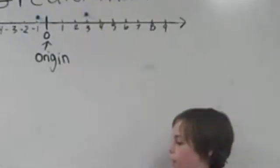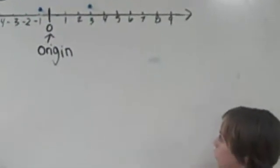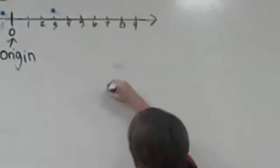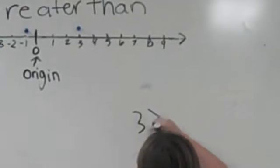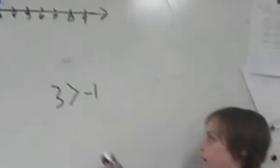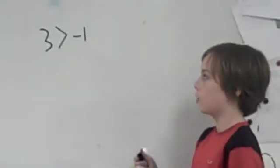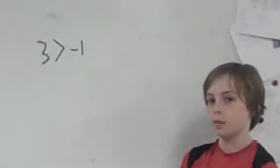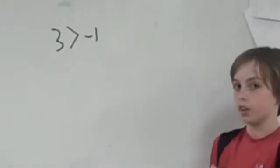As you can see, three is greater than the number one. A way to write this is by thinking of the symbol as an alligator mouth. The alligator always wants to eat the number that is larger.